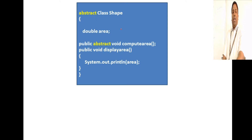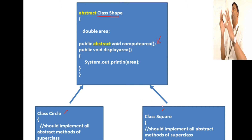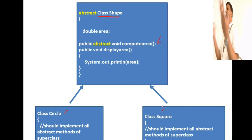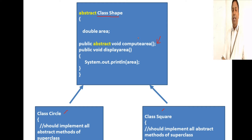Let us take an abstract class as an example. Abstract class Shape has one abstract method, compute area. You can have two different shapes: circle and square. For a shape, compute area has no meaning — a shape can be anything, it is a generic thing. So where you define the method compute area...